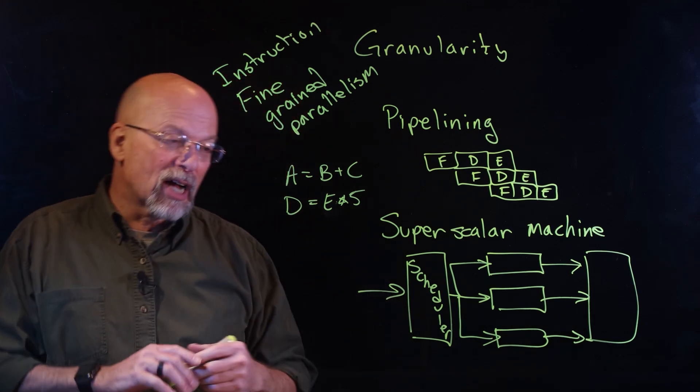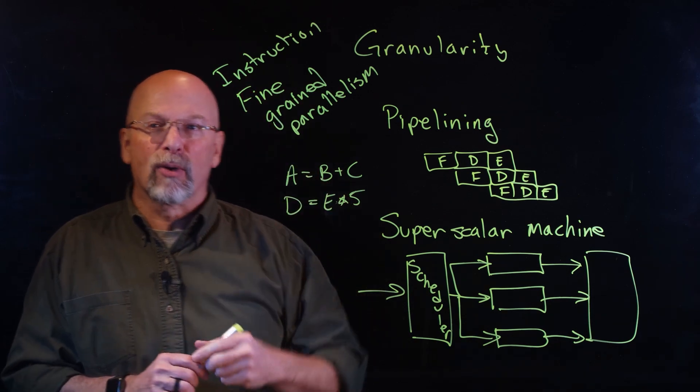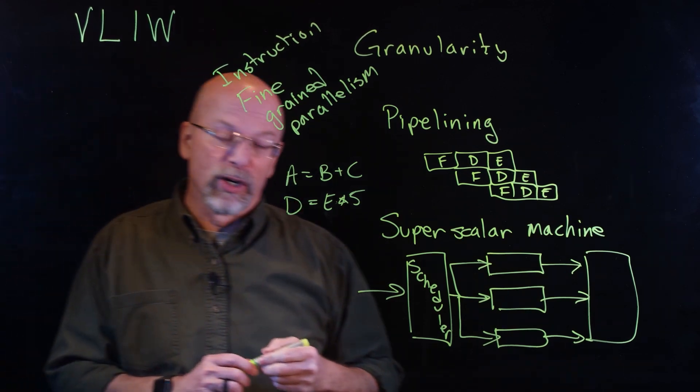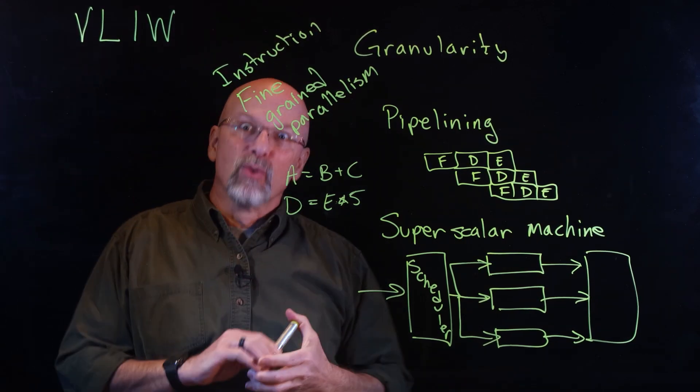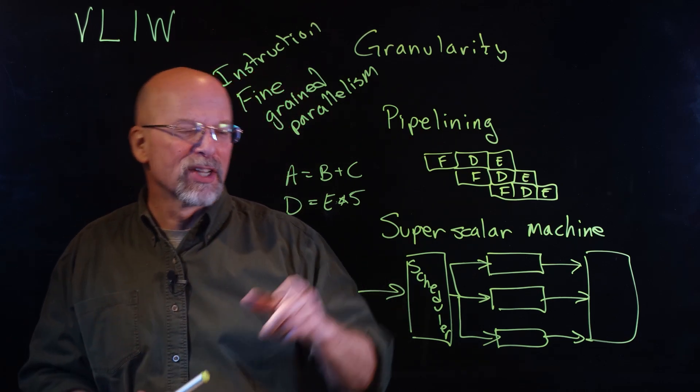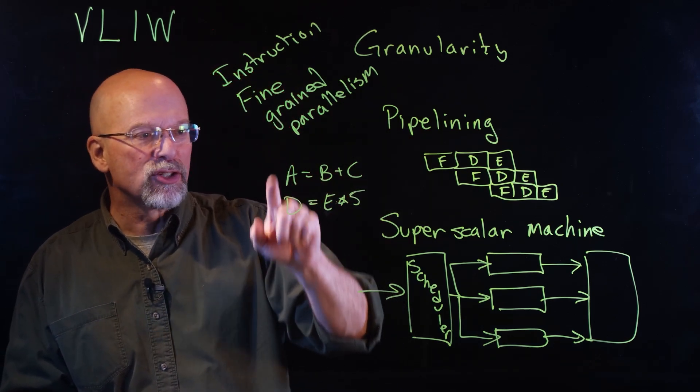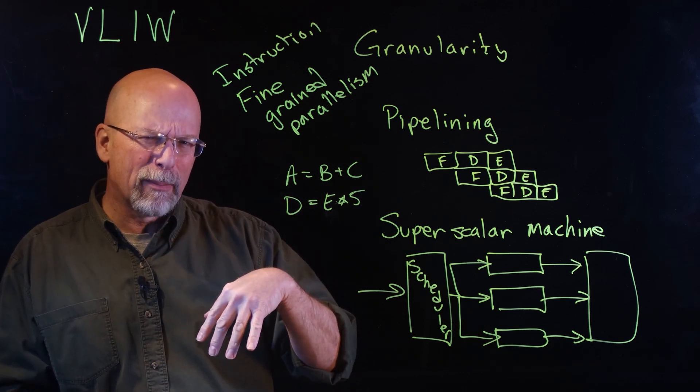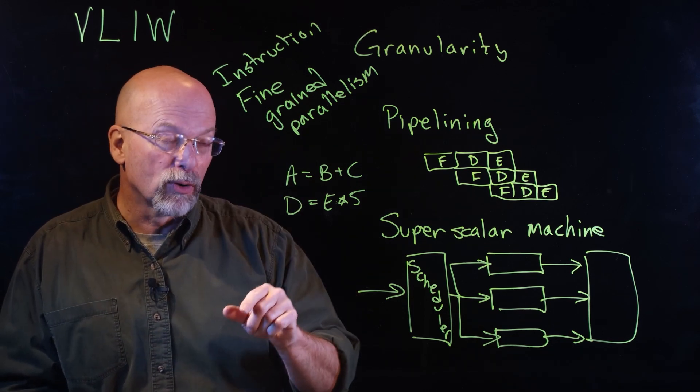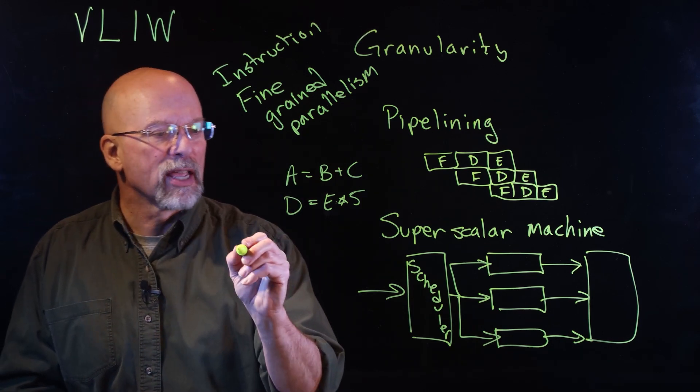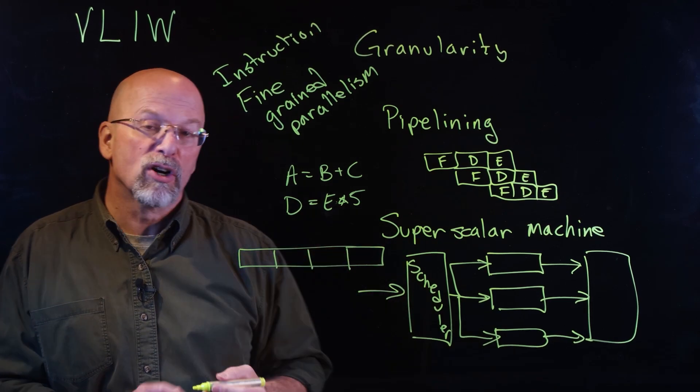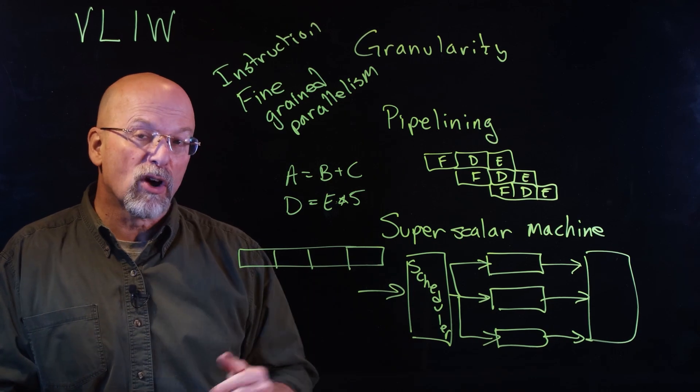Turns out there's even another kind of this instruction fine-grained parallelism. This is something called a very large instruction word, VLIW. This is really based on the programmer skill set. The programmer or the compiler looks at these instructions, because this is really happening at the assembly language level. The compiler may look at these two instructions and say, what I'm going to do is I've got a very large instruction.